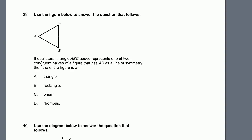Use the figure below to answer the question. If equilateral triangle ABC — where equilateral means all sides are equal — represents one of two congruent halves of a figure with AB as a line of symmetry, then reflecting it gives a matching half. All four sides of the complete figure are equal, but it's skewed, so it can't be a square. The entire figure is a rhombus.